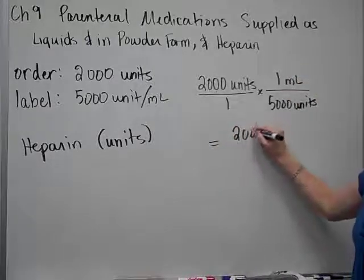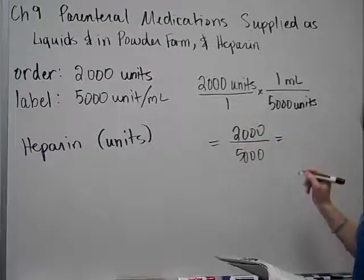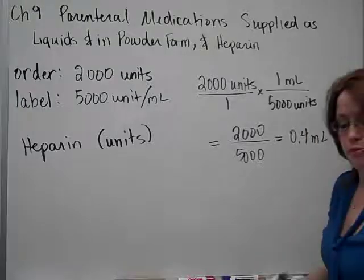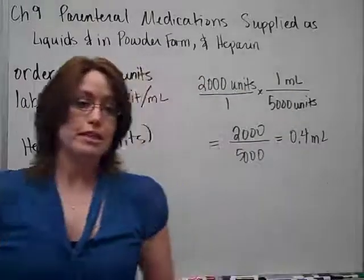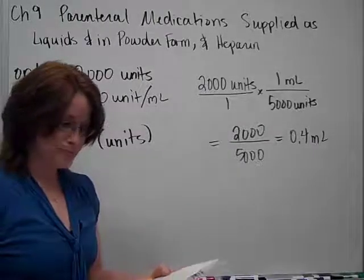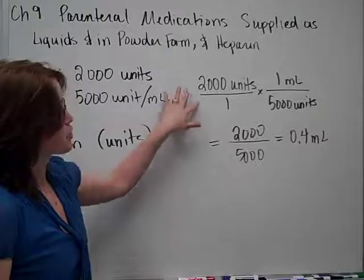Multiplying straight across, 2,000 over 5,000. And then, you can divide on your calculator if you need to. You would need 4 tenths of a milliliter. But, basically, you're treating it the exact same way. There's not much difference between the two examples. The only difference is, is if sometimes you have information about your patient.